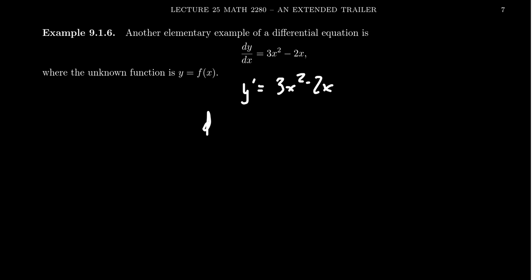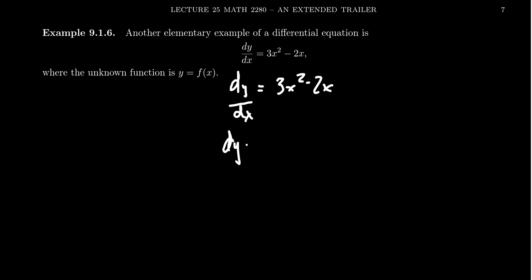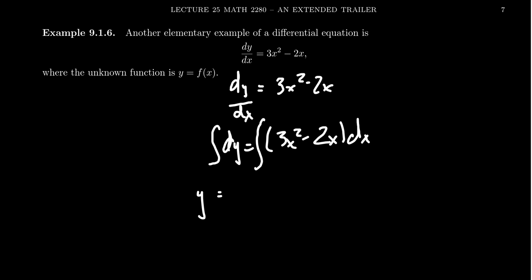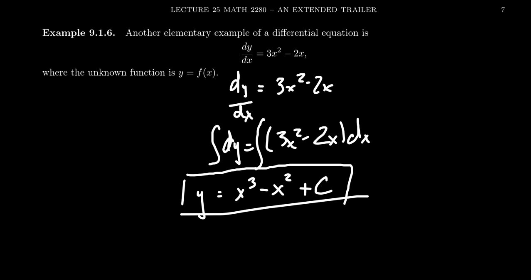In this situation, if we use Leibniz notation — dy over dx — it looks like a fraction and can be manipulated like one. Multiplying both sides by dx, we get dy equals 3x squared minus 2x dx. We can then integrate the right-hand side with respect to x and the left-hand side with respect to y. The left-hand side gives y, and the right-hand side gives x cubed minus x squared plus c. We've now found the general solution to this differential equation.